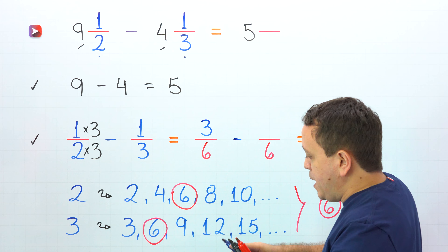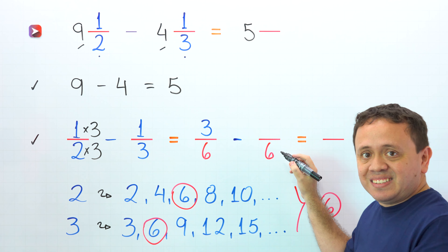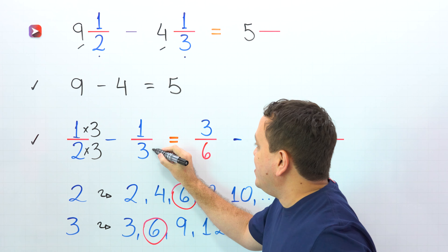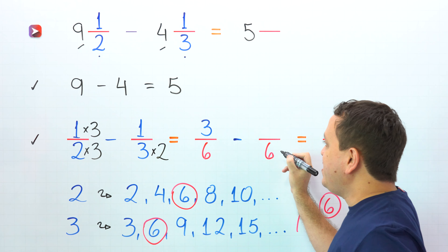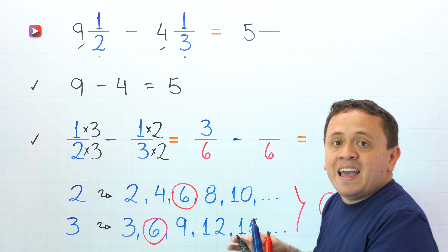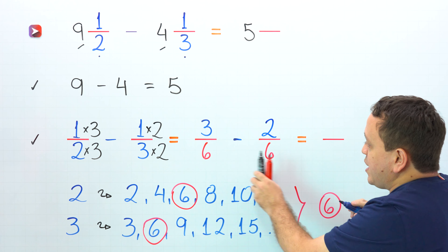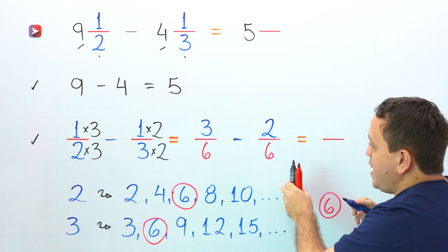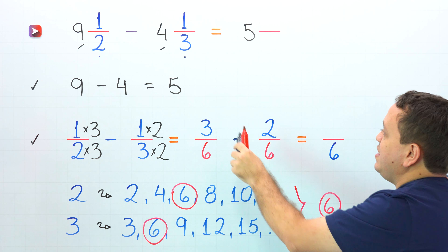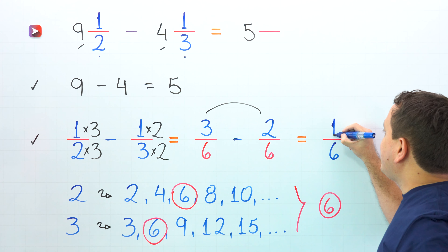On the other hand, pay attention — we're going to find an equivalent fraction to 1 third with a denominator of 6. By what number should I multiply 3 to get 6? By 2. 3 times 2 gives us 6. Whatever we do to the bottom, we must do to the top, and 1 times 2 gives us 2. Finally, we need to subtract these two fractions with like denominators: 6 on the left, 6 on the right. We continue by subtracting the numerators, and 3 minus 2 gives us 1.